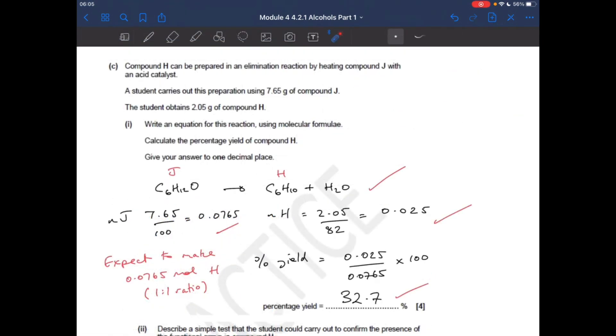See, we've got to calculate the percentage yield of compound H. So there's the equation in molecular formula. So the moles of J, mass over Mr, that many moles of J. The moles of H formed, mass over Mr, that many moles. You'd expect to make the same moles of H as J because of that one-to-one ratio. So the percentage yield is the actual moles over the expected moles times 100, 32.7%.